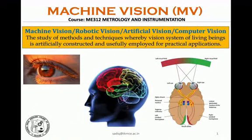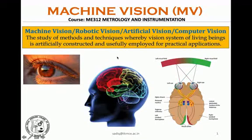Machine vision has a few names like robotic vision, artificial vision, computer vision, etc. Machine vision means it is a study of methods and techniques whereby the vision system of living beings is artificially constructed and usefully employed for practical applications. It acknowledges that it is studying the vision system of living beings, not just human beings.